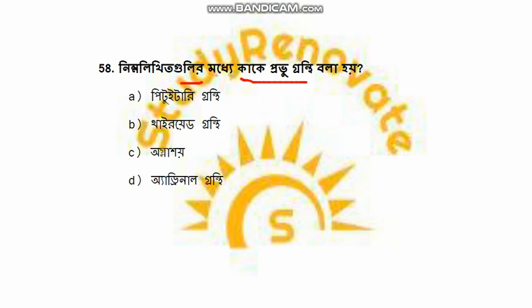The Master Gland question: first option is pituitary, second option is thyroid, third option is thyroid, fourth option is adrenal. The answer is pituitary — the pituitary gland is the master gland. It is located in the brain, while thyroid and adrenal glands are also referenced.